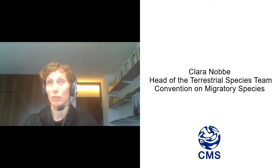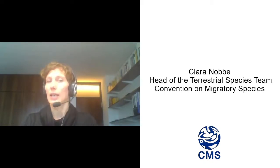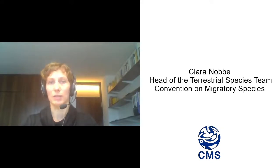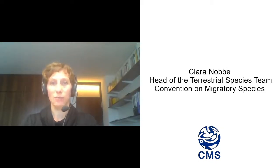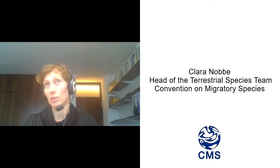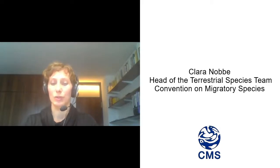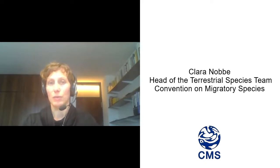CMS is one of the two only species-based global conventions that there are. It works very similarly to CITES. CMS also has two appendices, Appendix 1 and Appendix 2, under which parties select specific species that are endangered or that they think need concerted actions and cooperation to be conserved. Appendix 1 lists those species that require very strict protection because they are endangered and threatened by extinction.